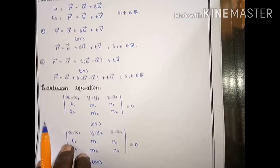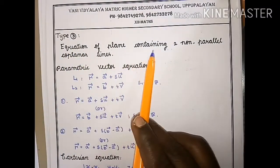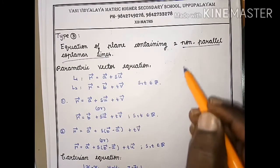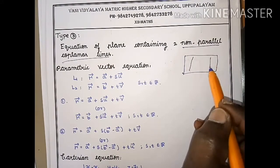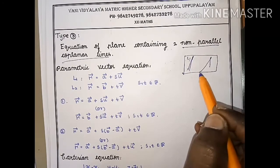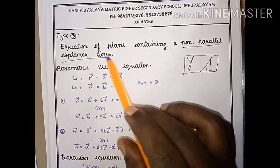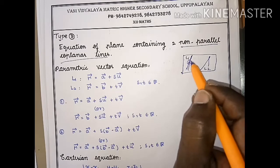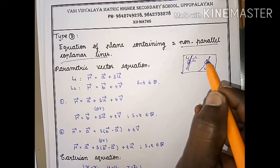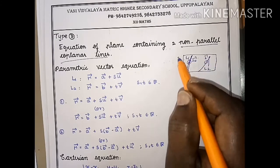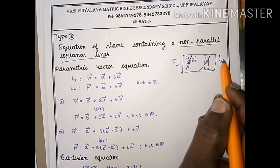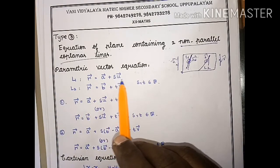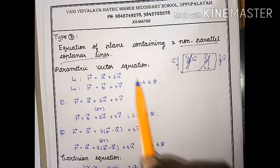Type 3: equation of the plane containing two non-parallel coplanar lines. Two non-parallel lines L1 and L2 lie in one plane. Line 1 has point A and direction vector u; Line 2 has point B and direction vector v. Parametric vector form: Line 1 is r = a + s·u, and Line 2 is r = b + t·v.